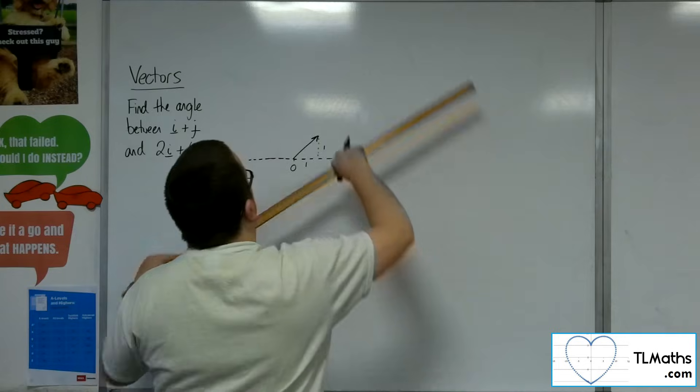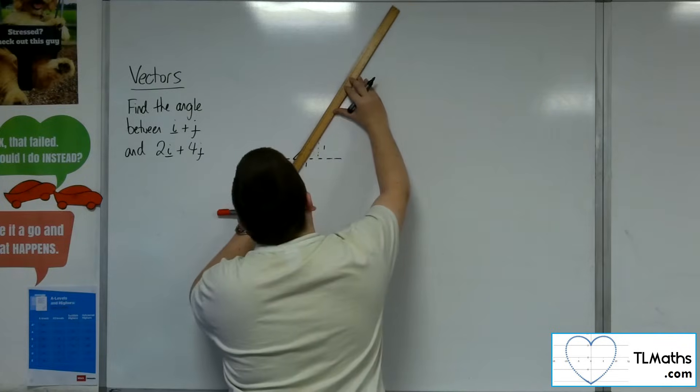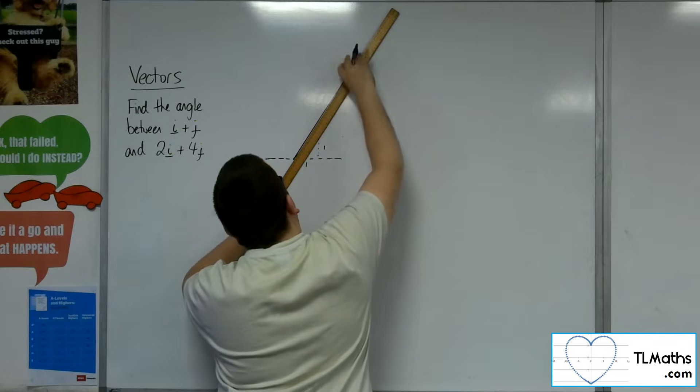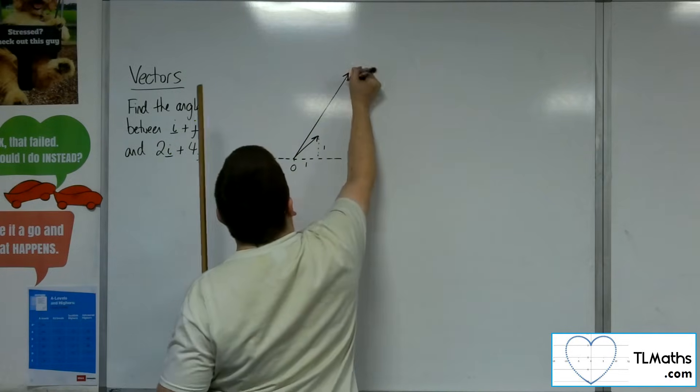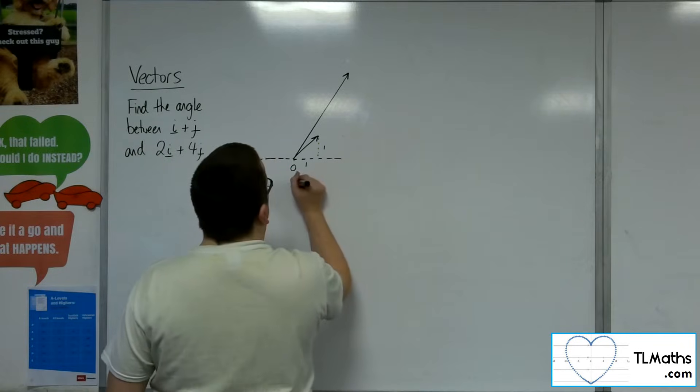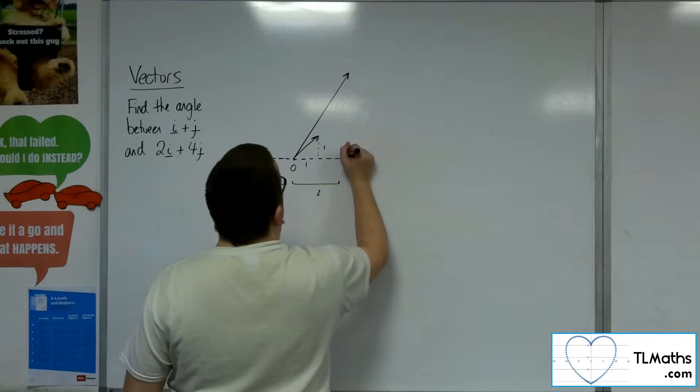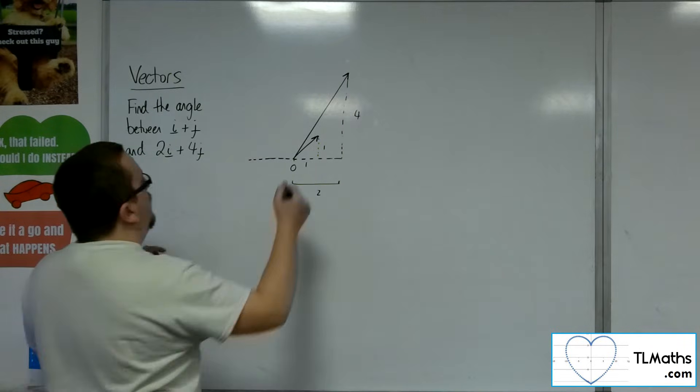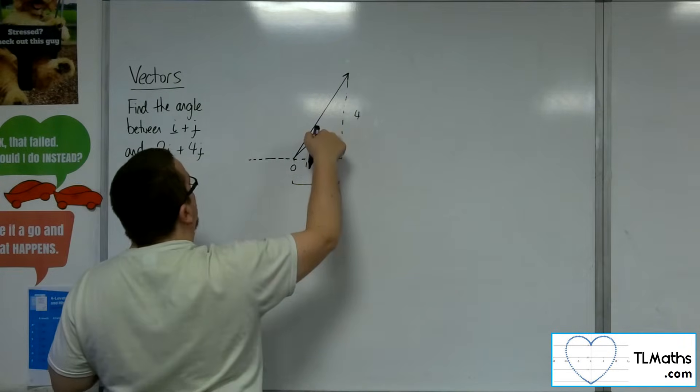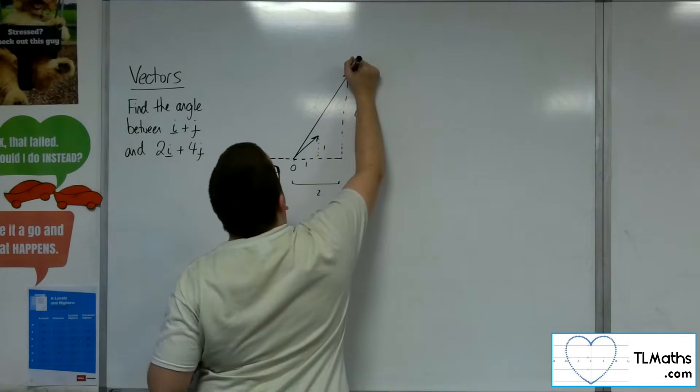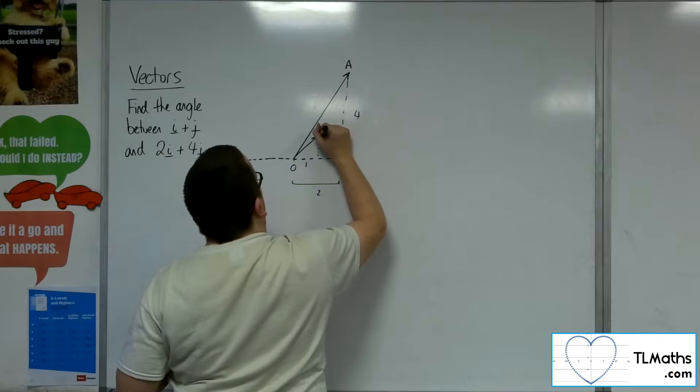Let's use the ruler on that one. So this one is 2 along and 4 up. So we've got i plus j and 2i plus 4j. And what I'm going to do is I'm going to call that point A and that point B.